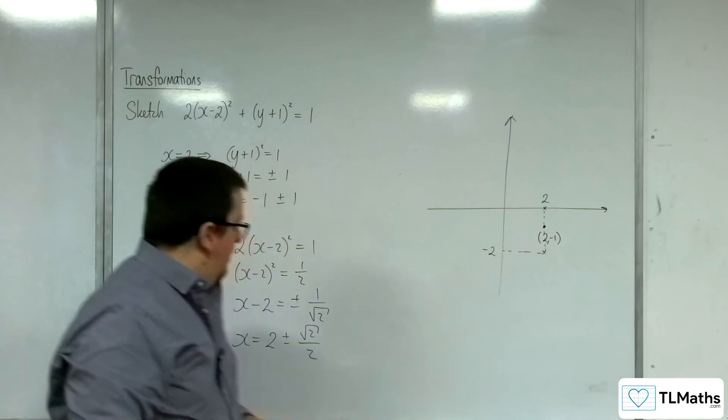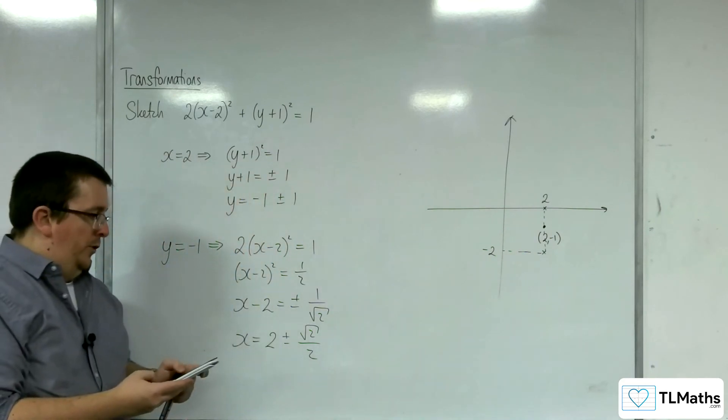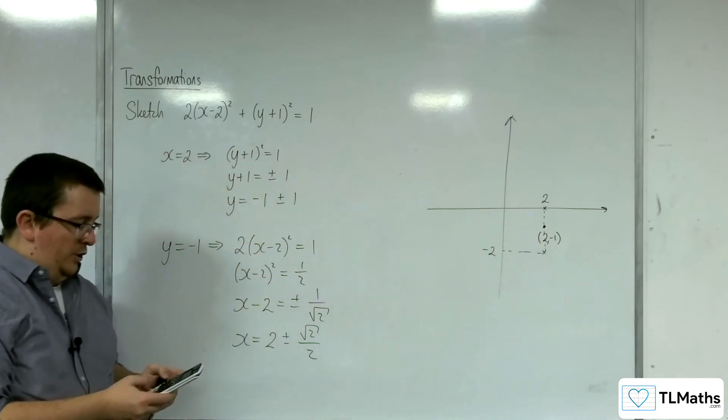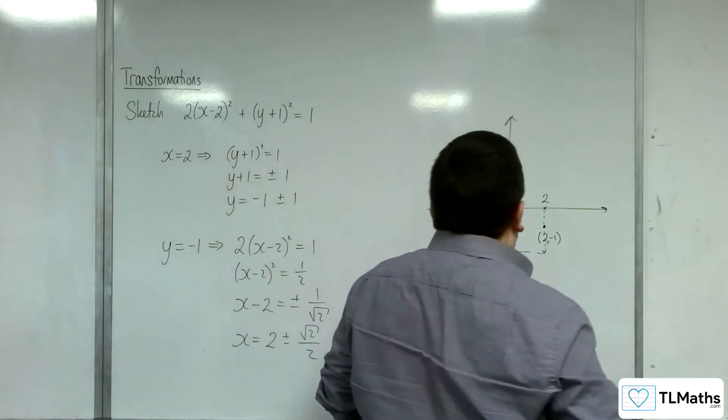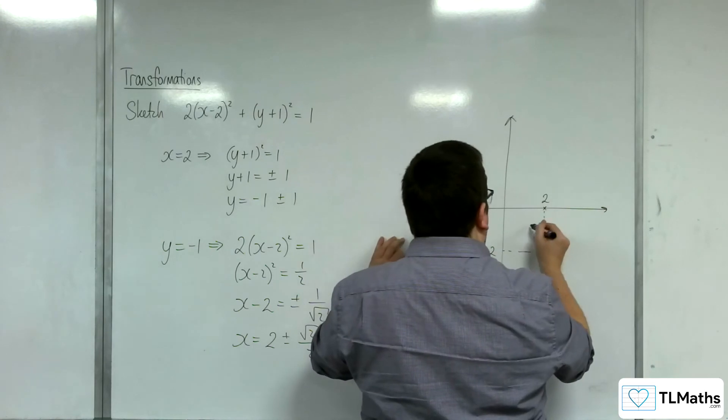Now, it would be prudent to double check what 2 - √2/2 actually is as a decimal. And that's 1.29, so we're going to have a point here.